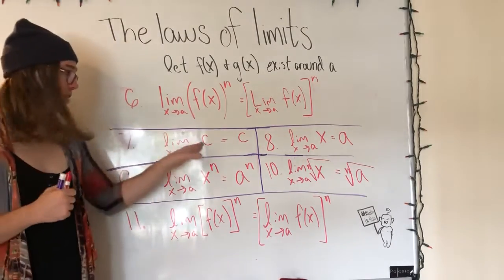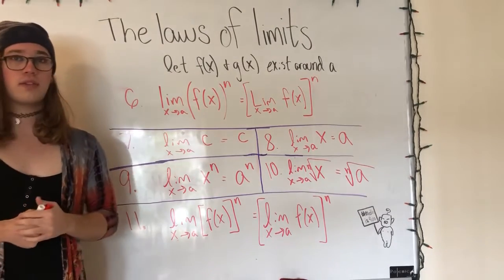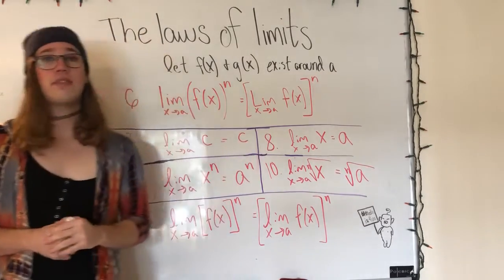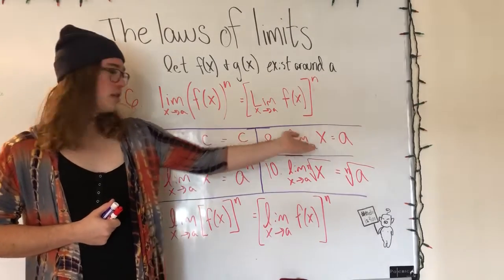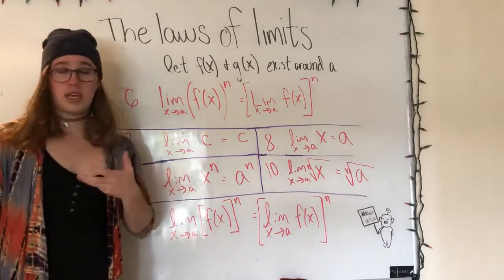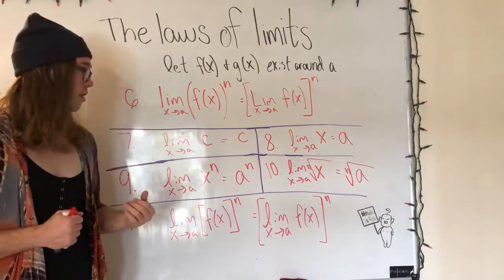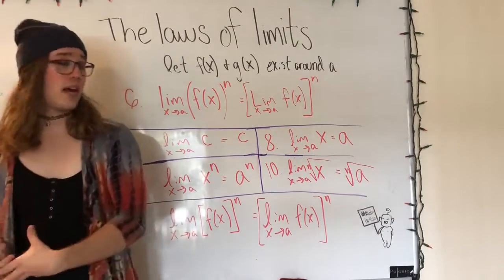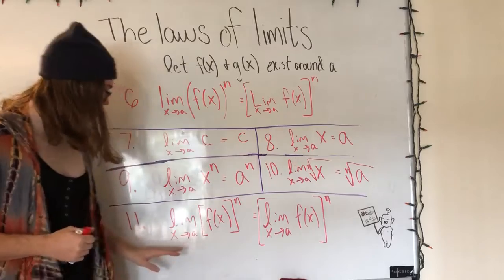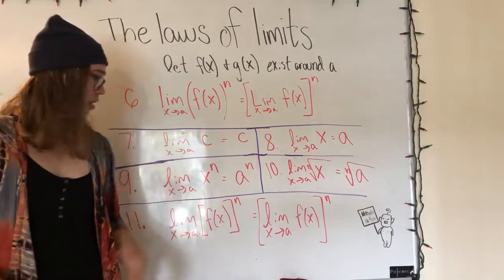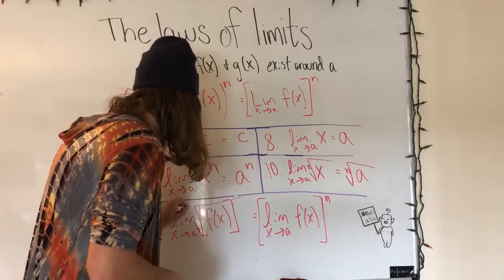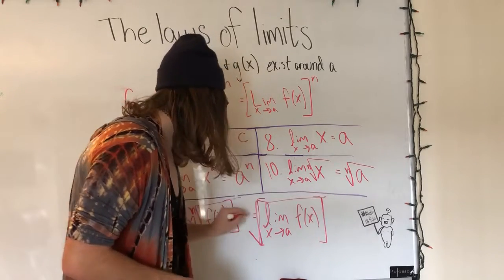The limit as x approaches a of c, where c is a constant, will just equal c, because our function is just the line y equals c. If we have the limit as x approaches a of x, that equals a — we can just plug in a, we have no domain restrictions. The limit as x approaches a of x to the n equals a to the n. The limit as x approaches a of the nth root of x equals the nth root of a. And the corollary: the limit as x approaches a of the nth root of f of x is equal to the nth root of that limit.